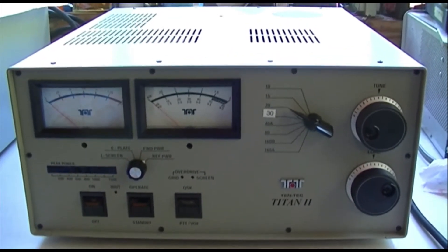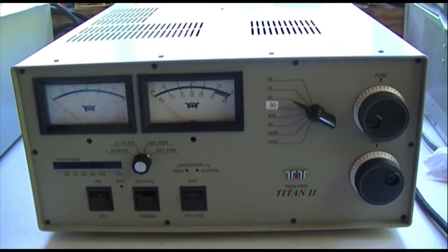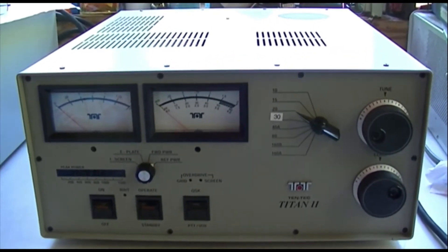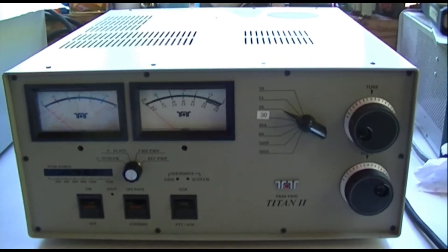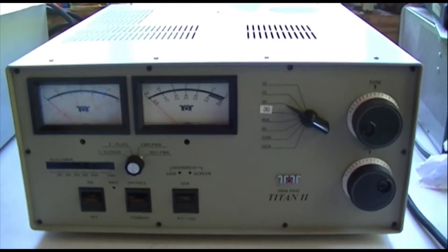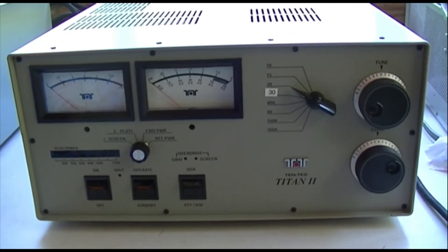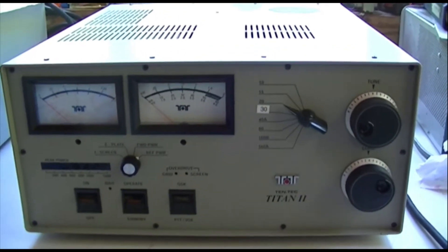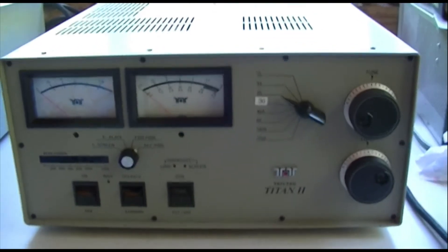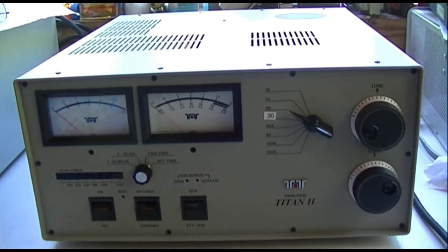This radio supposedly has the lowest distortion products of any of the legal limit commercially made amplifiers. So if you run something like an expensive Yaesu that's capable of class A sideband and you use this amplifier, I think you're set up to have the cleanest signal on the band. All right, we'll turn around, look at the back of it, and then we'll open it up and look inside.